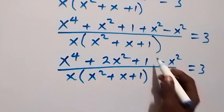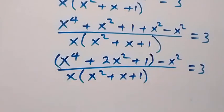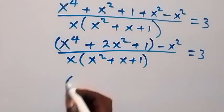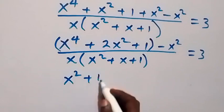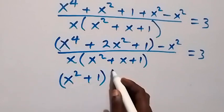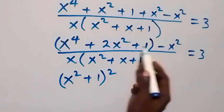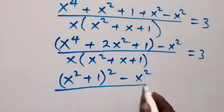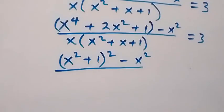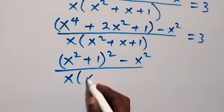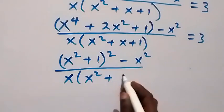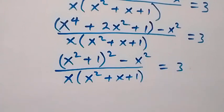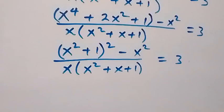When we group this together, we can shorten x raised to power 4 plus 2x squared plus 1 as x squared plus 1, all squared. Then minus x squared, over x times bracket x squared plus x plus 1, close bracket, which is equal to 3.